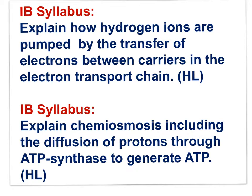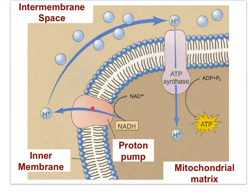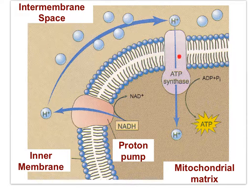Two IB syllabus statements: explain how hydrogen ions are pumped by the transfer of electrons between carriers in the electron transport chain; and explain chemiosmosis, including the diffusion of protons — hydrogen ions — through ATP synthase to generate ATP. In this simplified diagram: NADH is oxidized by electron carriers embedded in the inner membrane. The electrons release energy as they move to less energetic orbitals, serving to pump hydrogen ions into the intermembrane space. The accumulation of hydrogen ions results in diffusion through the ATP synthase, and ATP is synthesized.